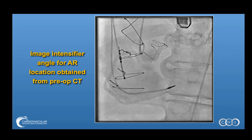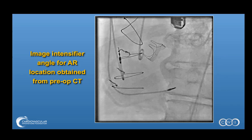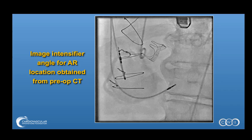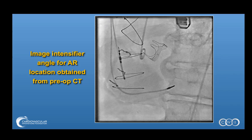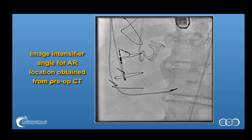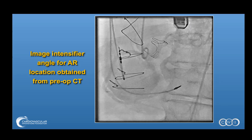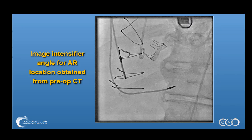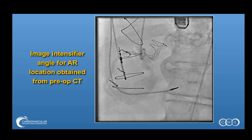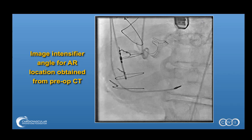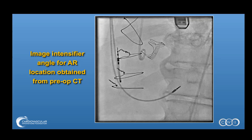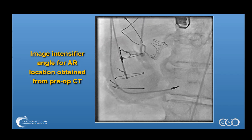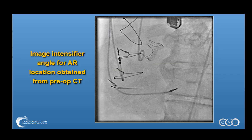Here you can see we're in an LAO view. The image intensifier is then positioned in this area with an aortogram to identify the leak arising from the aortic valve area and then entering into the right atrium. With this view, you can then see how a wire would be passed exterior to the aortic valve prosthesis and directly enter the fistula into the right atrium.